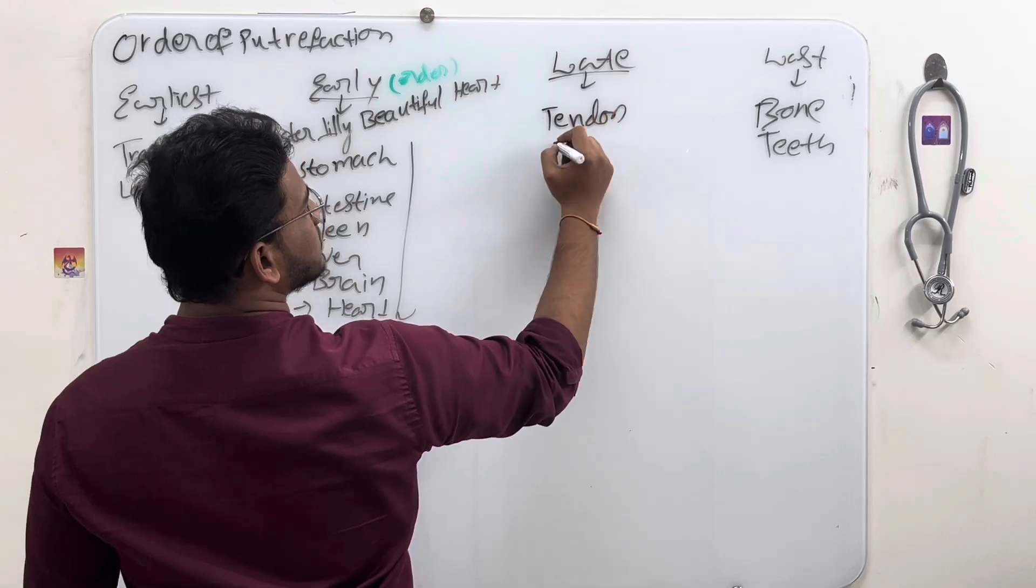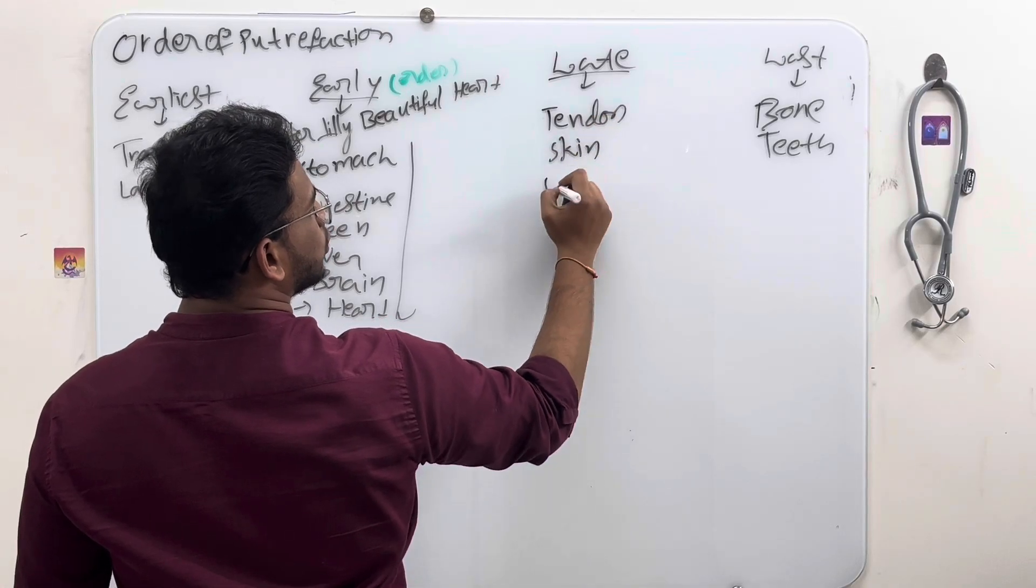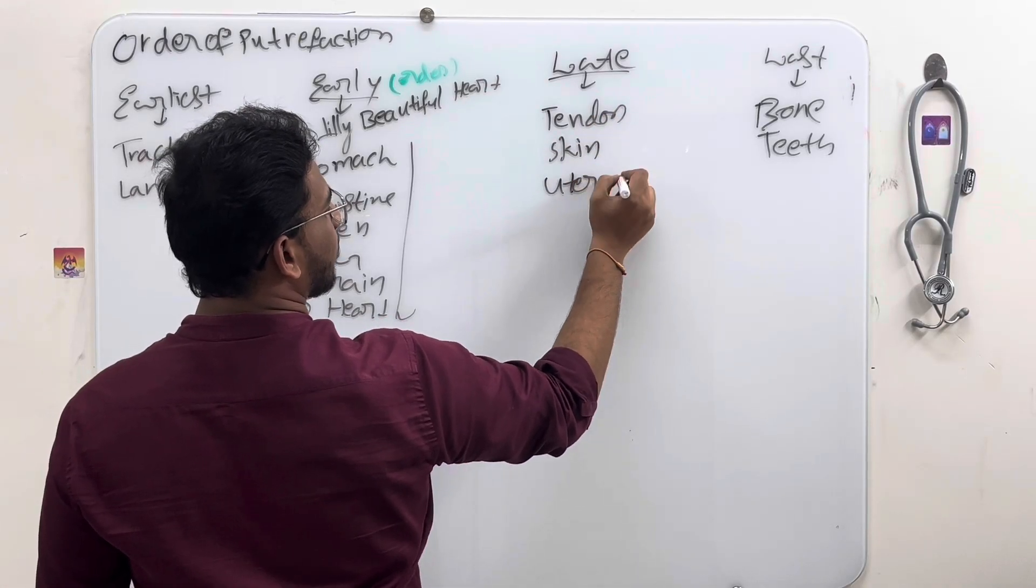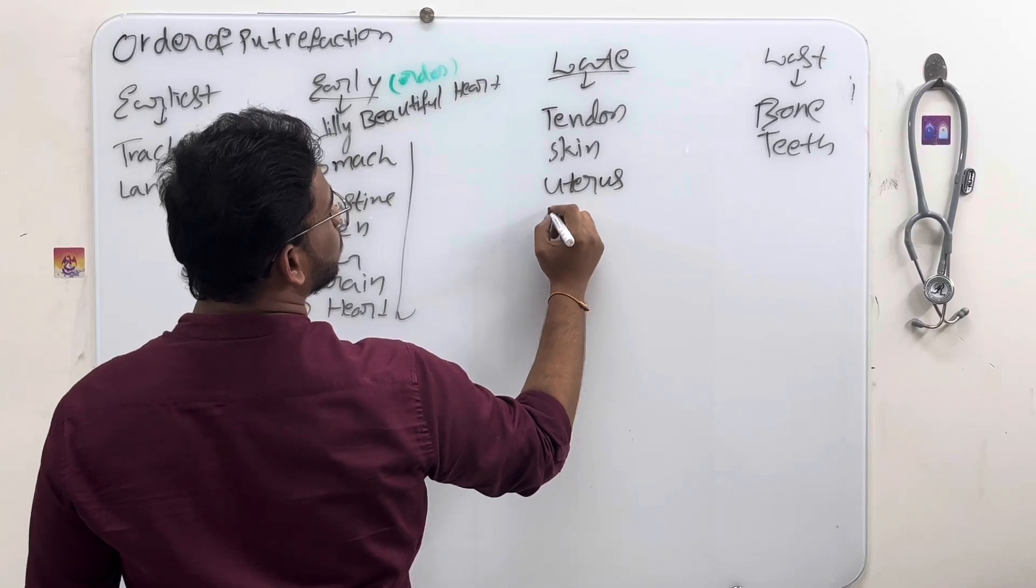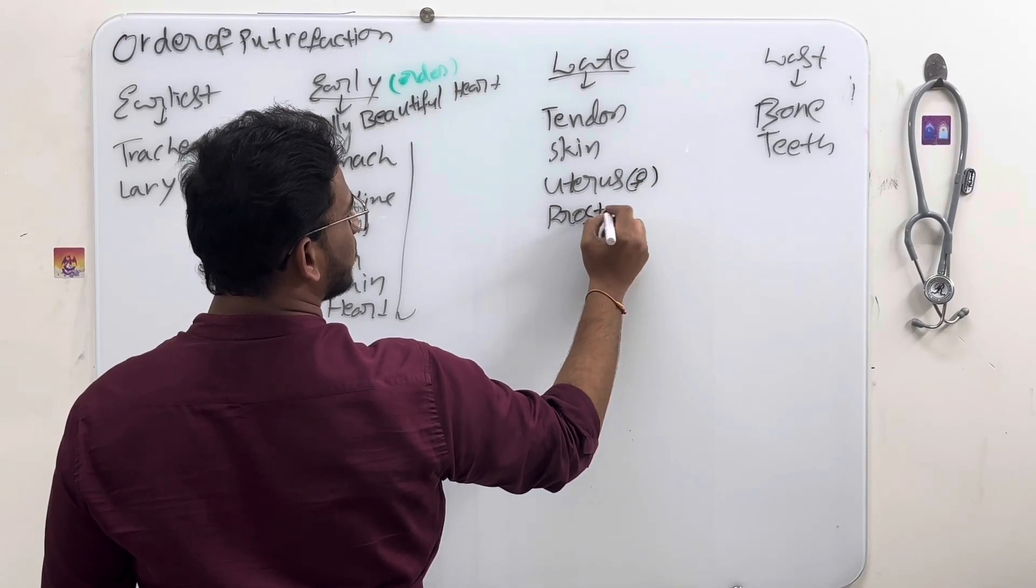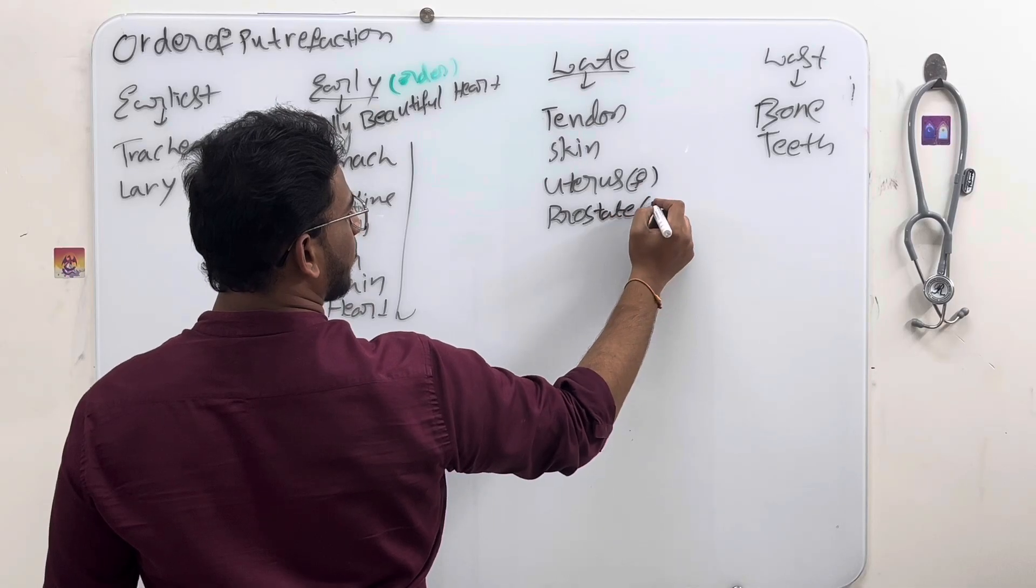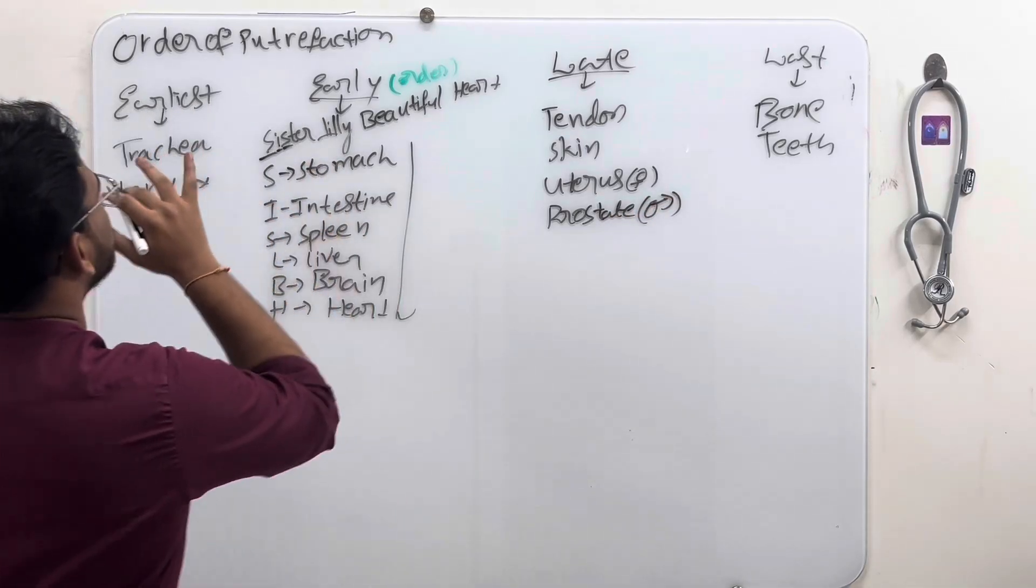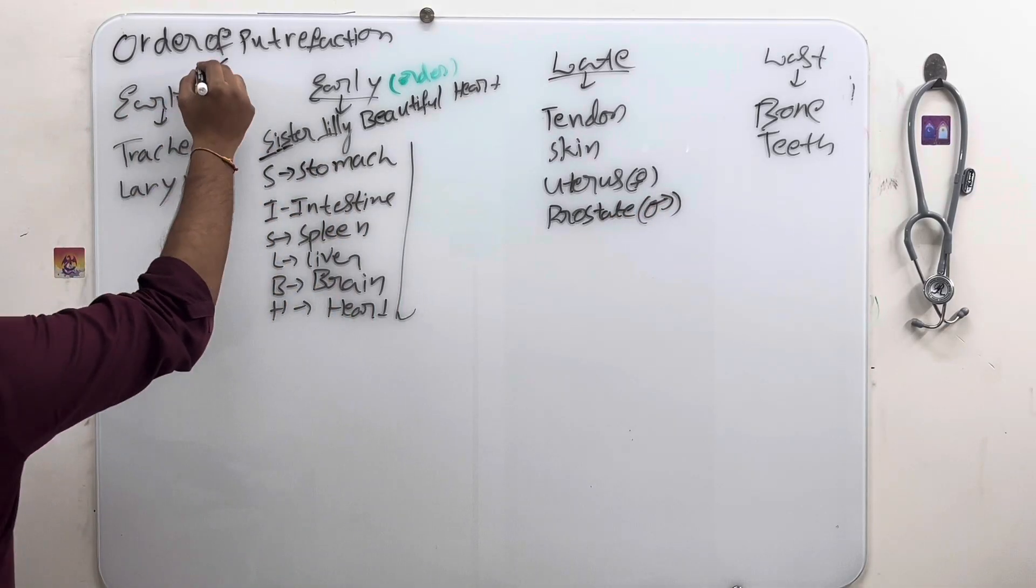Late we can see tendon, skin, uterus, and prostate in male, uterus in female. These are all the orders of putrefaction: earliest, early, late and lost.